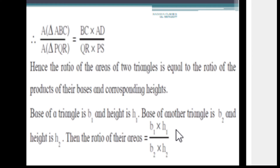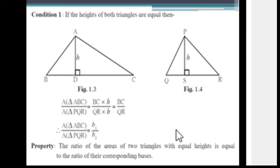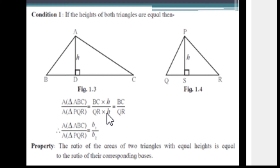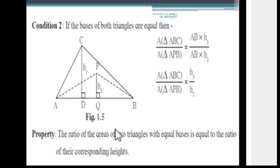Now there are some conditions. Condition 1: if the heights of both triangles are equal, then Area of triangle ABC upon Area of triangle PQR equals BC × h upon QR × h. The h cancels, so you get BC upon QR. The property is: the ratio of areas of two triangles with equal heights is equal to the ratio of their corresponding bases — that is, b1 upon b2.